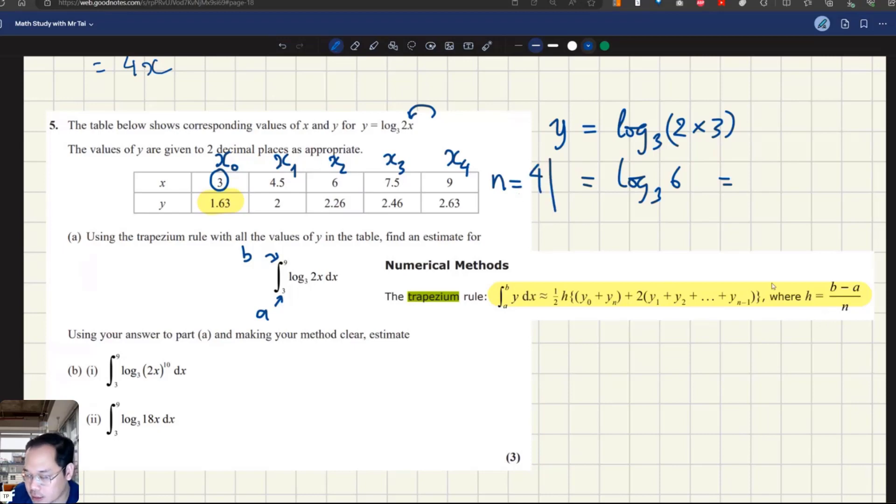The second step, we need to calculate the value of h. It is b minus a, which is 9 minus 3, divided by n, which is 4. 9 minus 3 is 6 over 4, equal to 1.5.